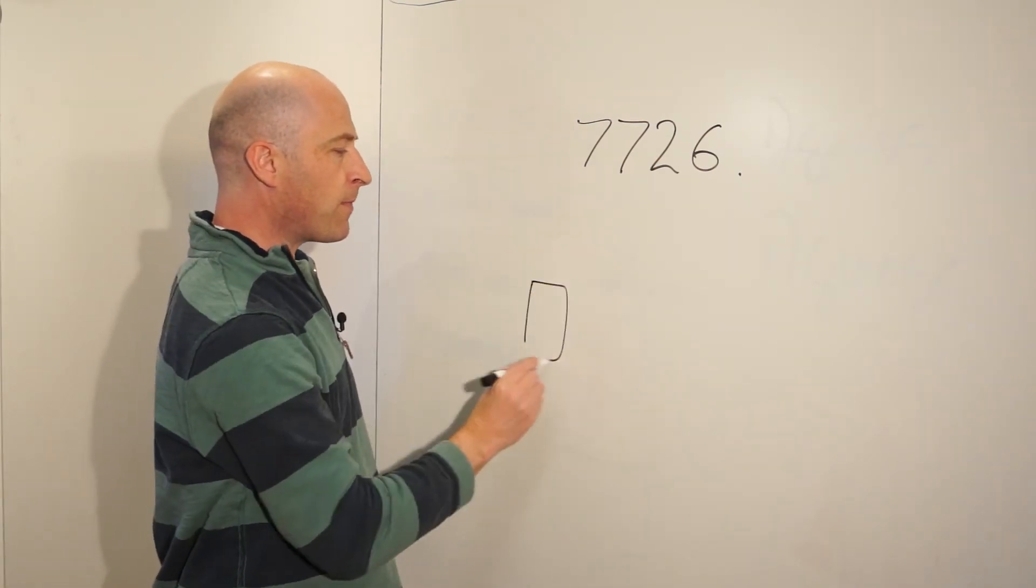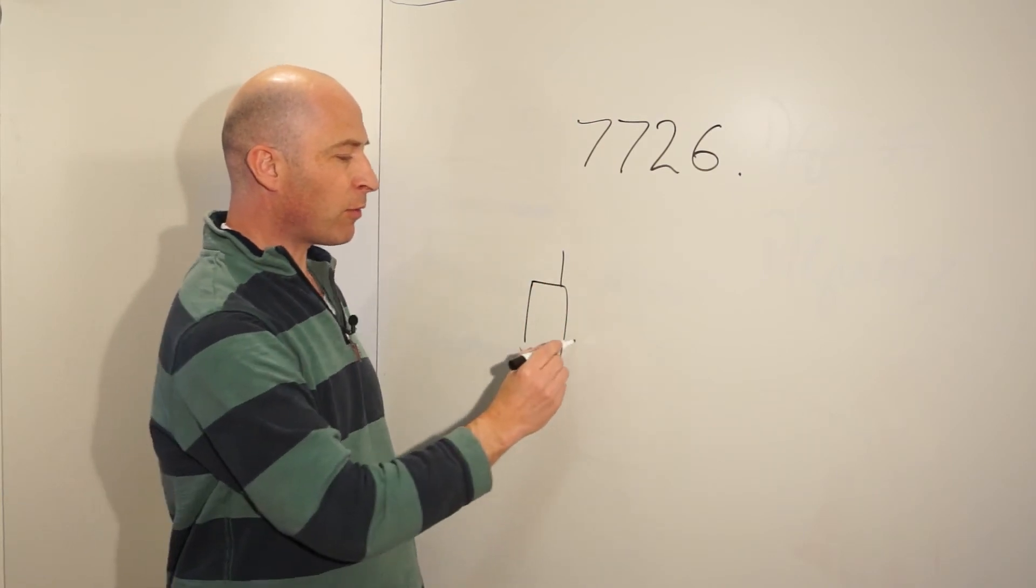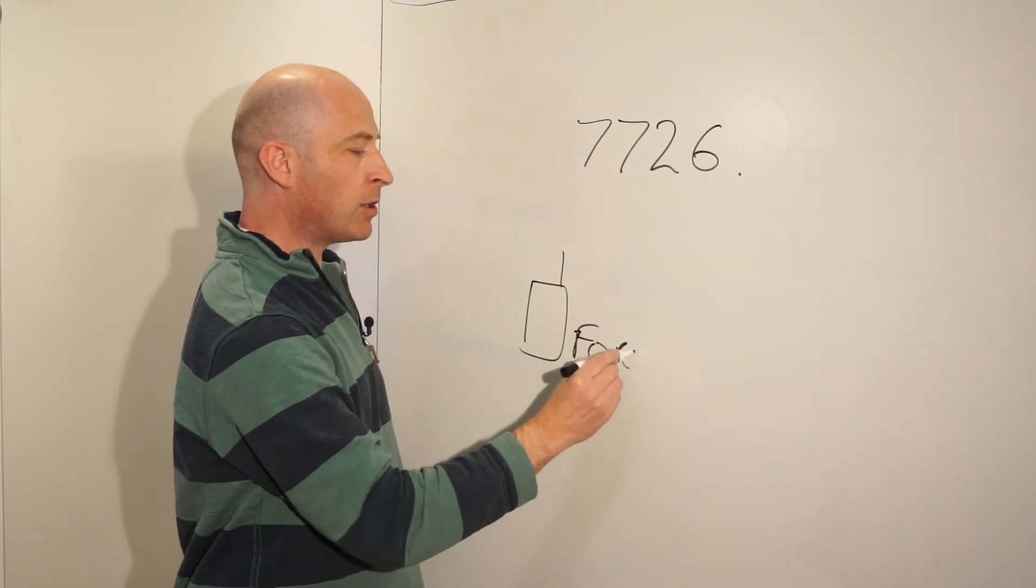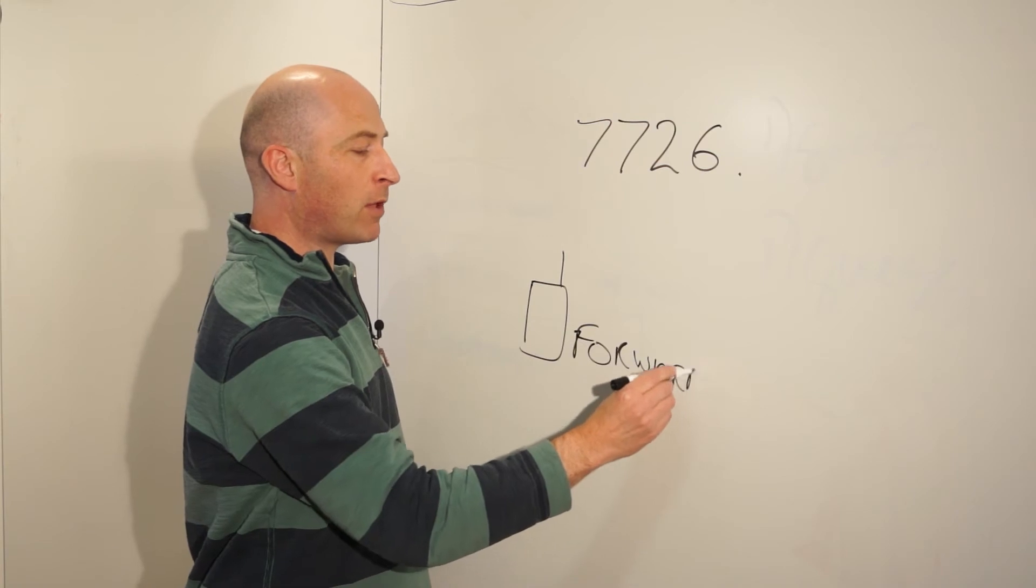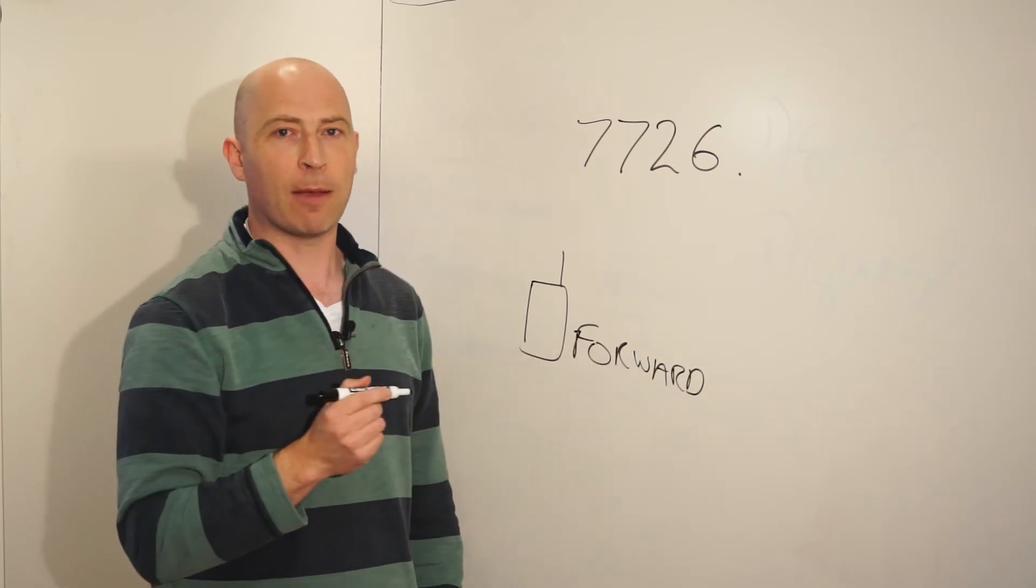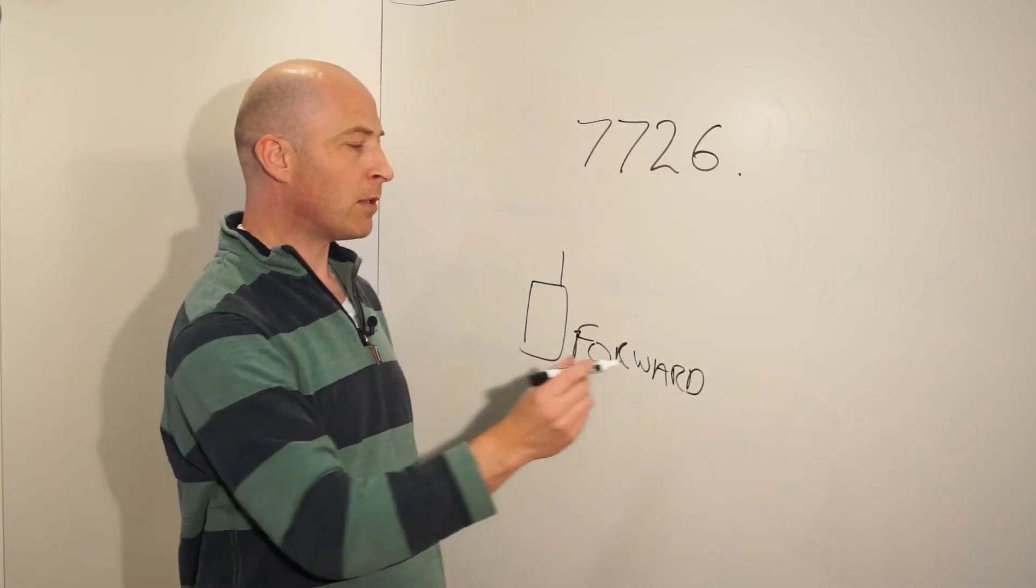If you get a message on your phone, and it's a spam message, you can forward it using the forward function on your phone. Every phone's a little bit different, but it's pretty straightforward on most phones to forward that message.